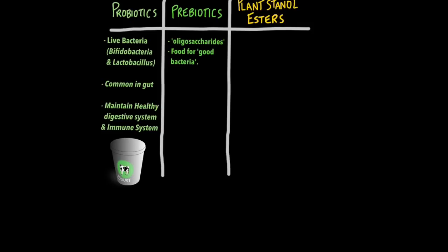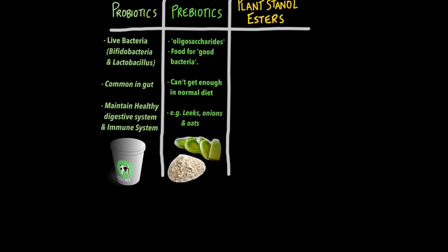Prebiotics are also given the term oligosaccharide. These are basically food for the good bacteria to encourage their growth. We can't really get enough prebiotics in our normal diet, so often people can take supplements. But typical dietary sources of prebiotics are leeks, onions and oats.